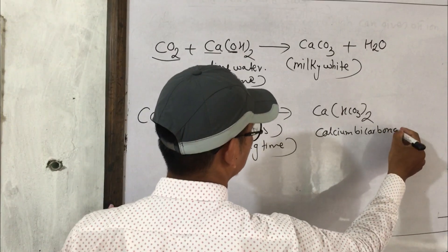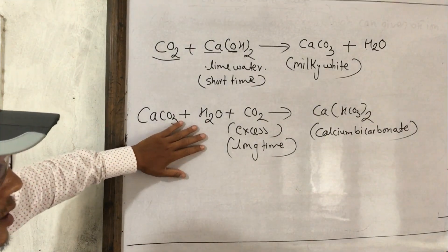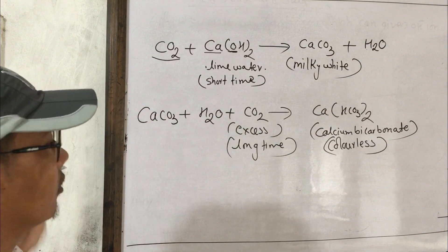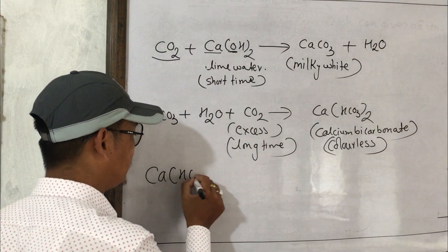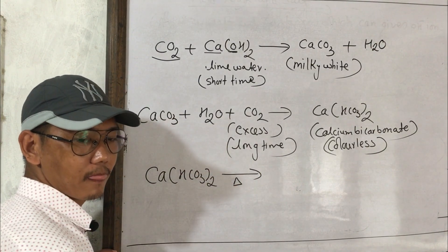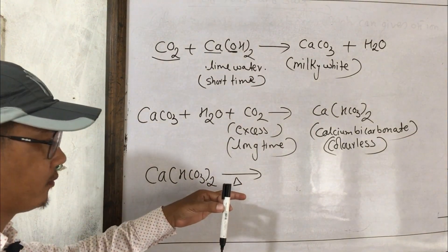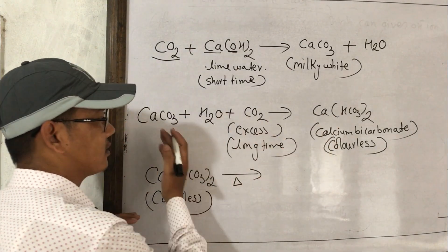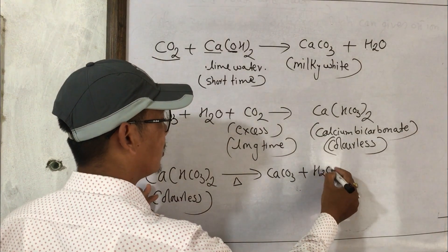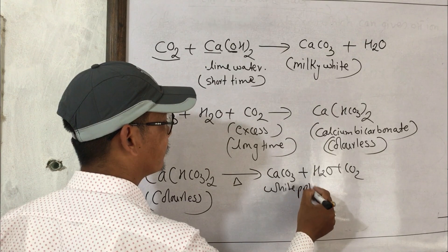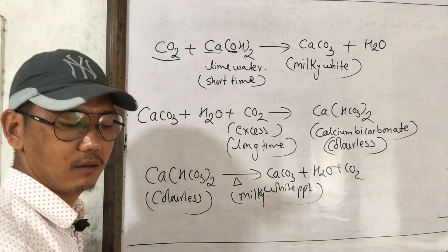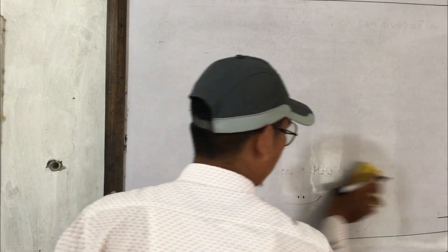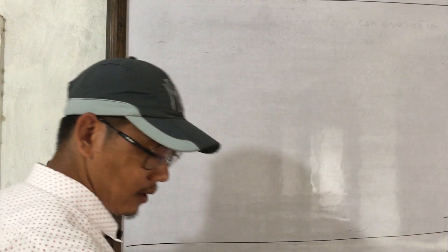Calcium bicarbonate is formed when excess CO₂ is passed. Ca²⁺ + CO₃²⁻ + H₂O + CO₂ gives calcium bicarbonate. The milky white precipitate disappears. This reaction confirms that the gas produced is CO₂.